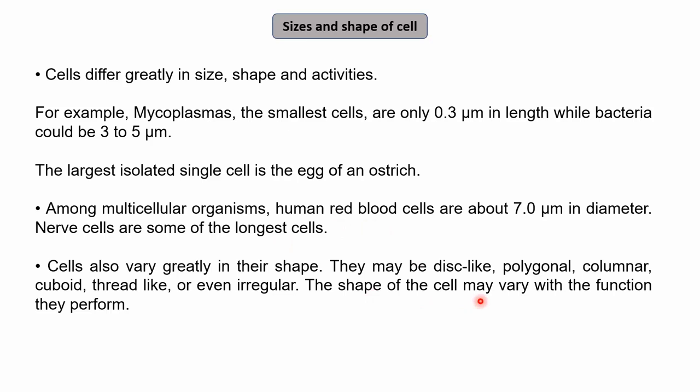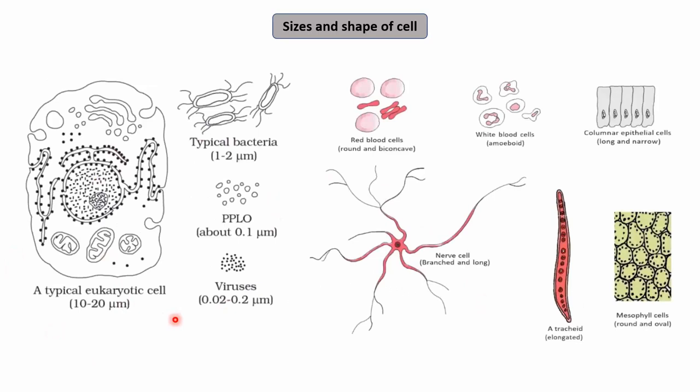The shape of the cell may vary with the function it performs. A typical eukaryotic cell can be 10 to 20 micron, while bacteria are 1 to 2 micron, PPLO around 0.1 micron, and viruses around 0.02 to 0.2 micron. Regarding shape: RBCs are round or bi-concave; white blood cells are amoeboid and acquire different shapes; epithelial cells may be columnar or cuboidal; nerve cells are branched and long; elongated cells like tracheids are found in plants; and mesophyll cells are round or oval.